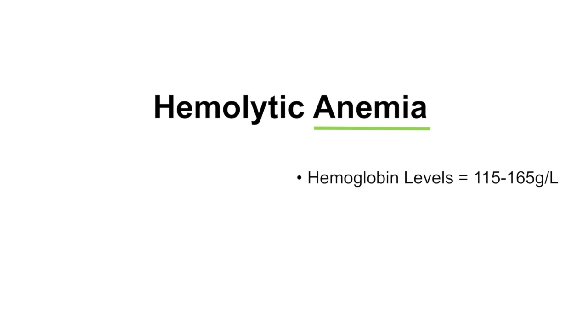So to begin, what is hemolytic anemia? When we look at the word, let's start with anemia — we just have to break it apart. In a normal reference range for hemoglobin levels within the blood, it's about 115 to 165 grams per liter. This is just a sample reference range; there are different reference ranges depending on the country you live in, which hospital you work at, etc. But this is the reference range I'm going to use for hemoglobin levels today.